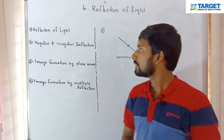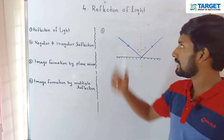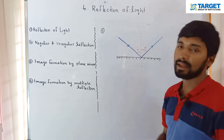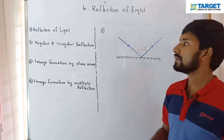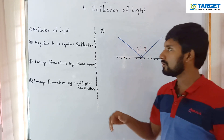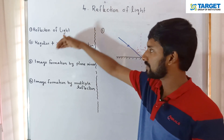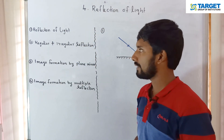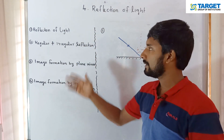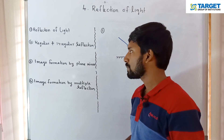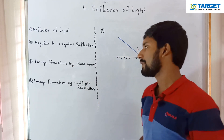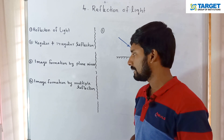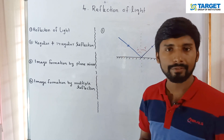Hi guys, I am going to cover the chapter on reflection of light. I will discuss four topics: first, reflection of light; second, regular and irregular reflection; third, image formation by plane mirror; and fourth, image formation by multiple reflection.